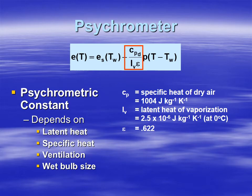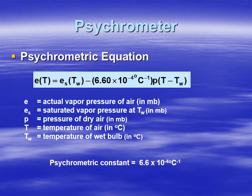Many of these variables are constants: c_pd, L_v, and ε can be combined together into the psychrometric constant. Pressure p is pulled out separately because it varies depending on location — for example, sea level versus Denver, Colorado, where it would be closer to 850 millibars. The simplified psychrometric equation lets you calculate the actual water vapor in the air based on the saturation vapor pressure at the wet bulb temperature, minus the psychrometric constant times pressure times the wet bulb depression (T − T_w).